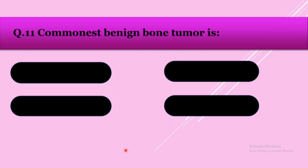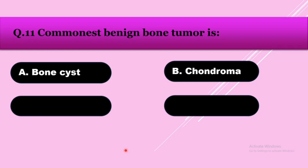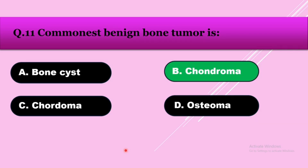Question number eleven: The commonest benign bone tumor is — option A: bone cyst, option B: chondroma, option C: chordoma, option D: osteoma. The answer is chondroma, which is the benign tumor.